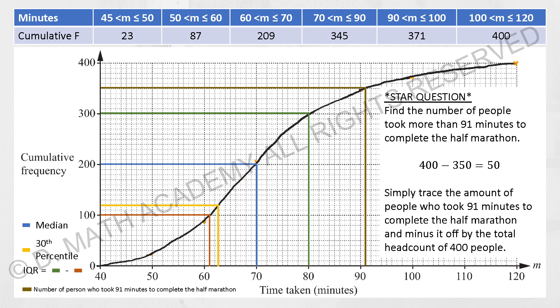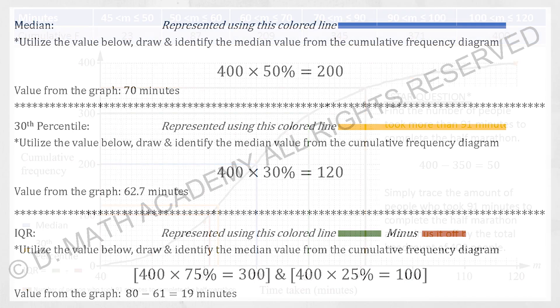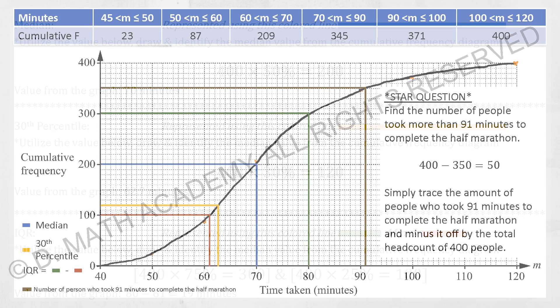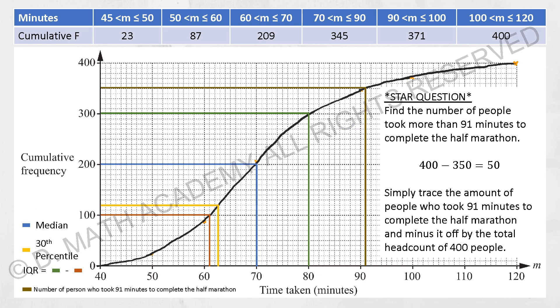Whereby for 30th percentile, I draw it using the yellow line over there. I took 400 times 30%, I get 120. So from 120, I trace it back down. I get the value from the graph as 62.7 minutes.